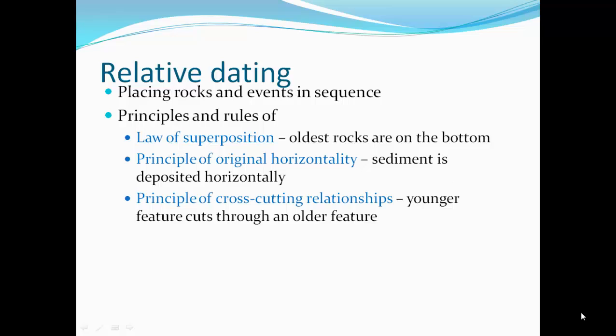By placing rocks and events in sequence, we have relative dating. The principles and rules of relative dating include: first, the law of superposition — the oldest rocks are on the bottom. Also, the principle of original horizontality — sediment is deposited horizontally. The older sediments are on the bottom, and the newer sediments form on top. The older sediments eventually become lithified into rock, and then the next oldest layer gets lithified into the next slightly newer rock, kind of like a layer-cake approach.